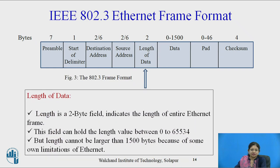Multicast means sending a message to a group of stations, and broadcast means all ones in the destination field, delivering to all stations on the network. The length of data is a 2-byte field that indicates the length of the entire Ethernet frame. This field can hold length values between 0 and 65534, but due to some limitations Ethernet provides only 1500 bytes of data.